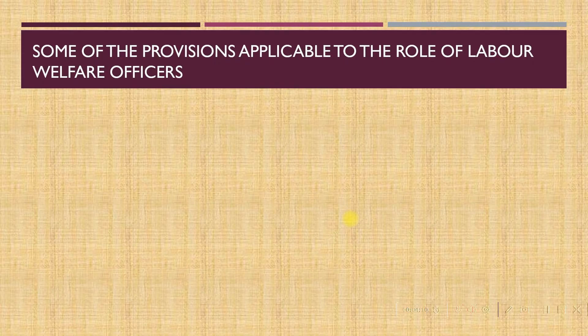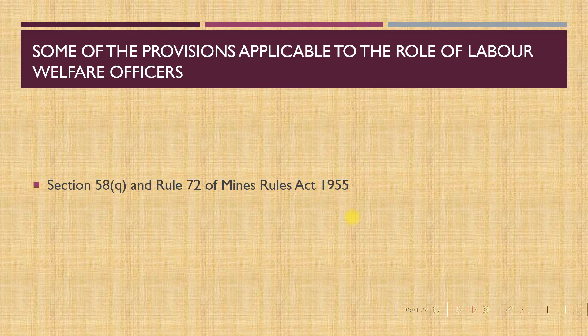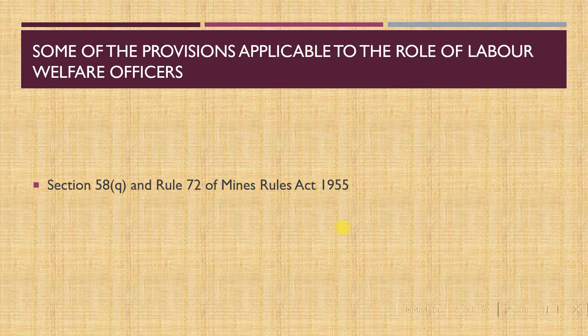Some provisions applicable to the role of labour welfare officers come under Section 58Q and Rule 72 of the Mines Rules Act 1955. If due to illness or temporary absence the labour officer is unable to perform duty, the agent, owner, or manager should authorize a person to act as welfare officer or in equal capacity. Additionally, a written notice of discharge, resignation, or termination of a welfare officer should be sent within seven days to the owner, agent, or manager.